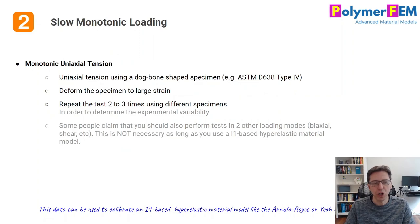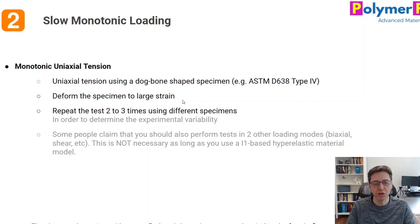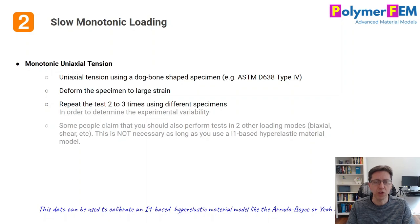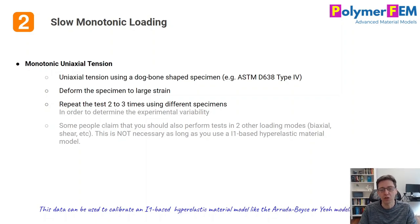For the slow monotonic loading case, I recommend a simple uniaxial tension test using a dog-bone shaped specimen — I prefer ASTM D638, though other standards are equally good. You deform the specimen to large strain monotonically and repeat this two or three times using different specimens. You don't need multiple loading modes like biaxial or shear, as long as you calibrate an I1-based hyperelastic model such as the Arruda-Boyce model or the Yeoh model. A single loading mode reduces cost and time significantly.